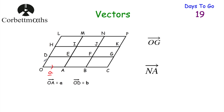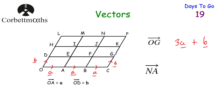Press pause and find the vector OG. To get from O to G, we go 1, 2, 3 to the right and then 1 up. That's a plus a plus a going right, which is 3a, and then plus b going up. So the vector OG equals 3a plus b. You could also write b plus 3a — both are correct. Well done if you got 3a plus b.